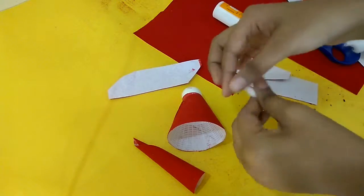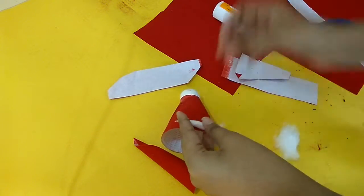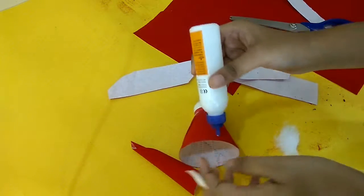After that you need some cotton and put it on the edge of the cork. That's what I am doing.